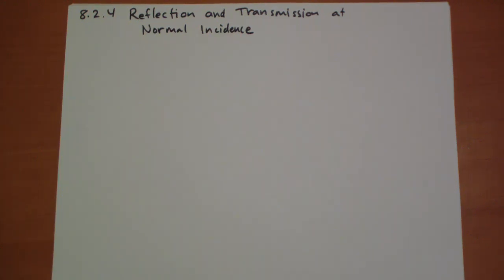Calculating what happens to an electromagnetic plane wave at normal incidence to a boundary between two different linear media is not difficult. Hi, I'm Jonathan Gardner and this is Section 8.2.4 of Introduction to Electrodynamics by Griffiths, second edition.